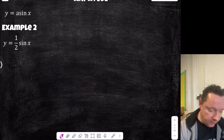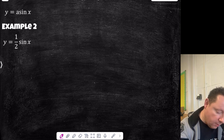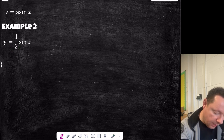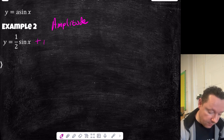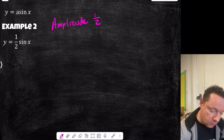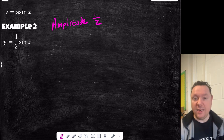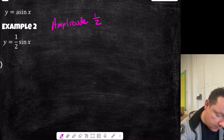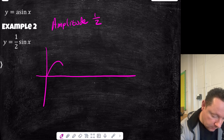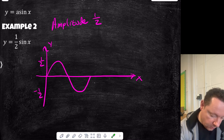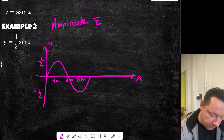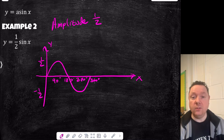Let's say y equals a half sine x. The number in front is called the amplitude of the graph — it's how high it gets, its max and minimum value. The amplitude of this graph is one half, so the peak is a half high and the trough is minus a half. Notice the total span is 1. The x-axis markers remain 90, 180, 270, 360. So that is y equals a half sine x.